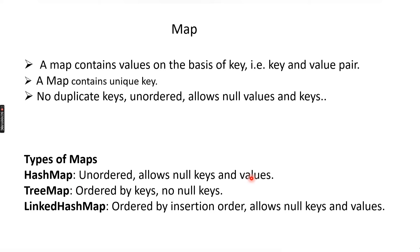HashMap allows null keys and values. LinkedHashMap also allows null keys and values, but TreeMap does not allow null keys — similar to TreeSet, which does not allow null values. In the same way, TreeMap also does not allow null keys.